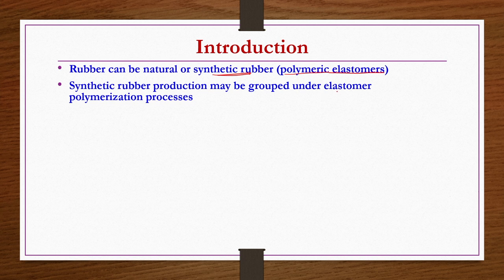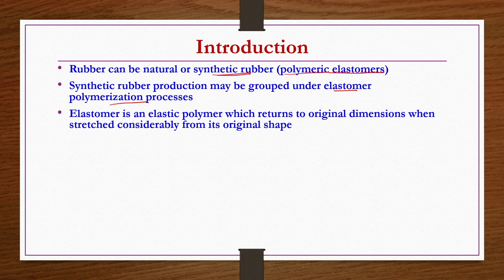Synthetic rubber production may be grouped under elastomer polymerization processes. Elastomeric polymers may be taken as a subtype of polymers, and elastomer polymerization processes are used to produce synthetic rubber. The word elastomer indicates it has some kind of elastic property — an elastic polymer which returns to original dimensions when stretched considerably from its original shape.